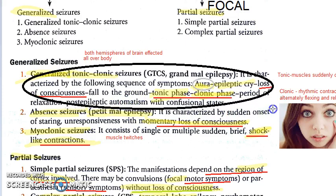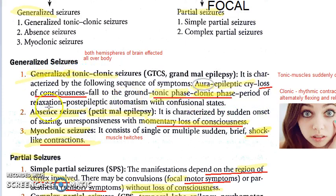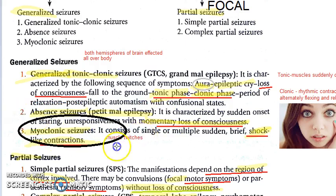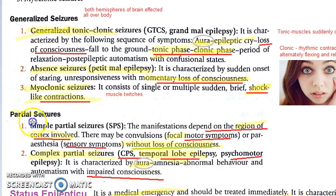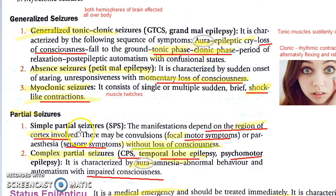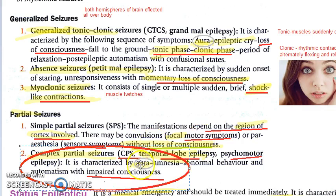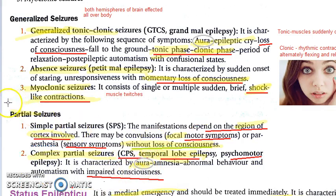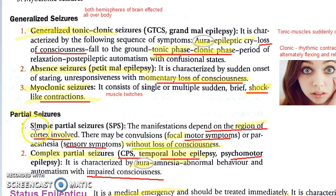Under generalized seizures, you have generalized tonic-clonic seizures (GTCS) or grand mal epilepsy, absence seizures or petit mal epilepsy, and myoclonic seizures. Under partial seizures, you have simple and complex. In simple partial seizures, there is no loss of consciousness. In complex partial seizures, there is impaired consciousness. In focal seizures, only a small portion — not both hemispheres — of the brain is involved.